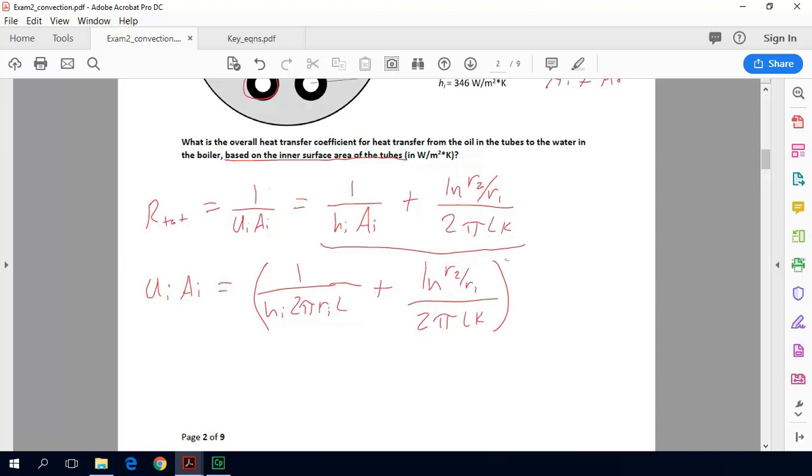We need to take the inverse of that because we took the inverse of this term. Then if we wanted to solve for U_i we can divide both sides by A_i. In this case A_i is just the same as we defined for the convective thermal resistance on the inside: 2π r_i times L. And that is our complete answer.